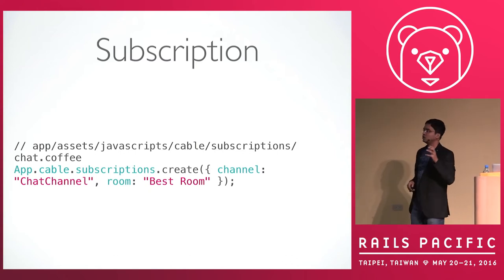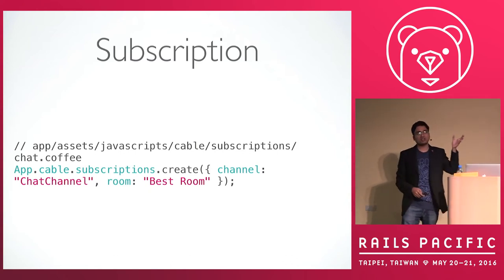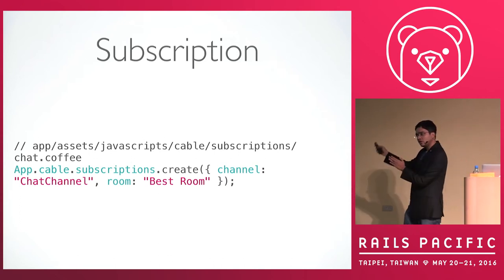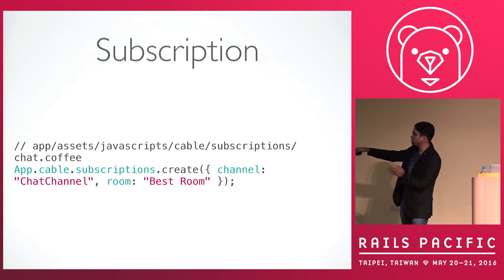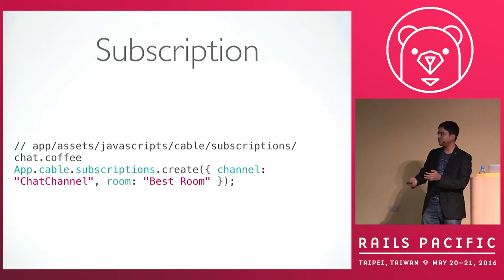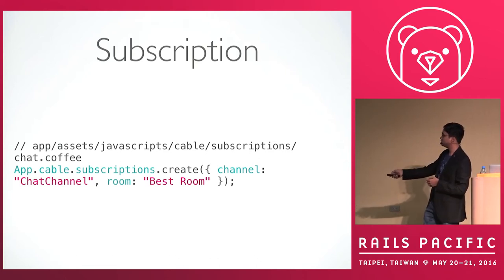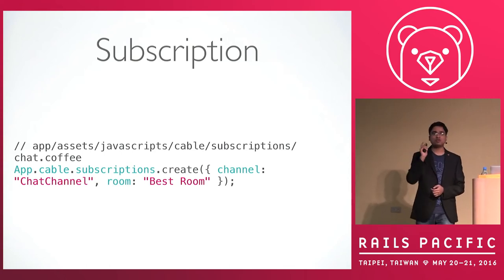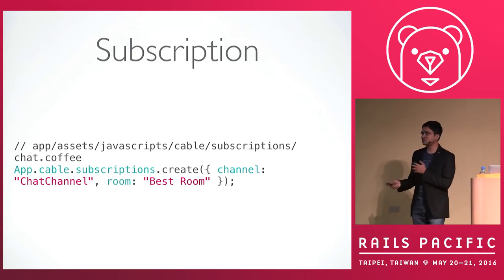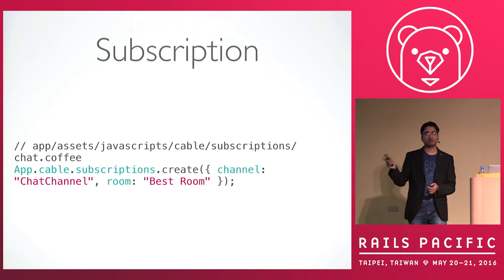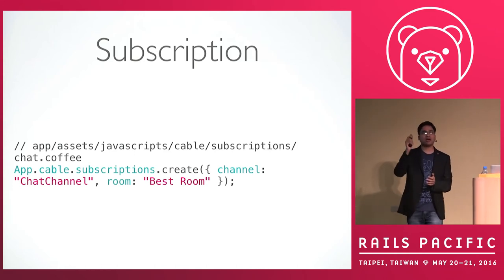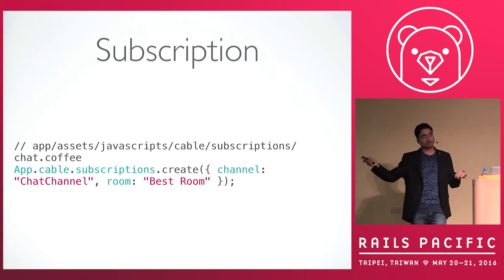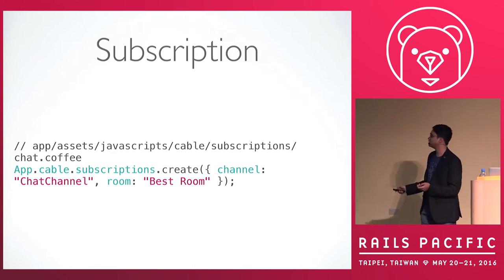This is important to note because in cases where your apps may live on multiple different servers, this is the place where you say your Rails app is running on some URL. Pass in the URL over here using the WS protocol and ask it to connect to that particular server. After you have created this connection, you ultimately use this connection to create what are called subscriptions to channels. What I am saying over here is on load of my page, create a subscription to this particular chats channel.